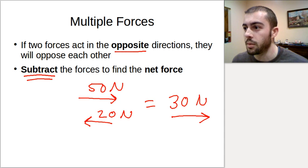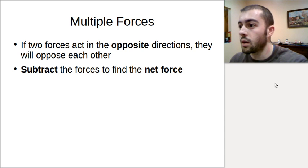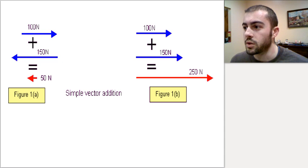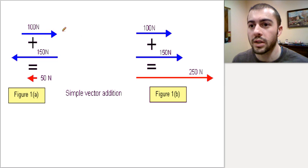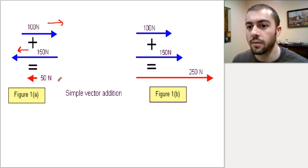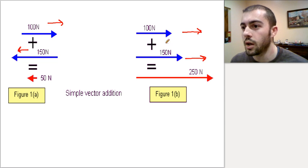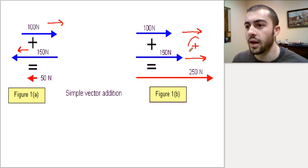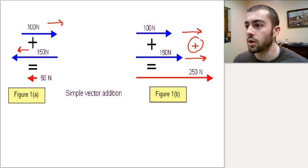So looking at a couple of examples of combining forces: in this case, we have forces going in opposite directions - 100 newtons going to the right and 150 newtons going to the left. So to combine those forces, we subtract them. 150 minus 100 gives us 50 newtons. In this case over here, we have two forces going in the same direction, so we must add them. 100 and 150 would give us 250 newtons for the net force. So opposite direction, we subtract; same direction, we add.